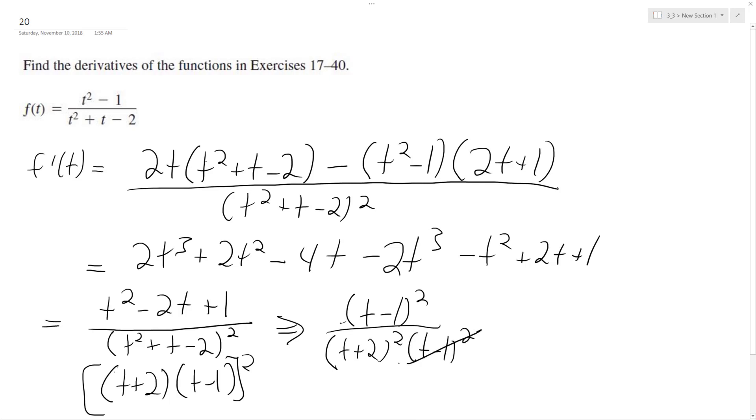And conveniently, these cancel out. And my derivative is 1 over t plus 2 squared. And that's it.